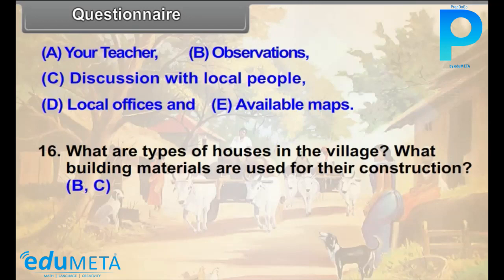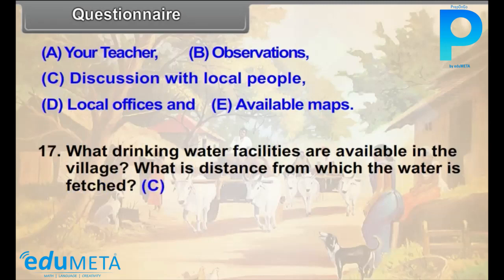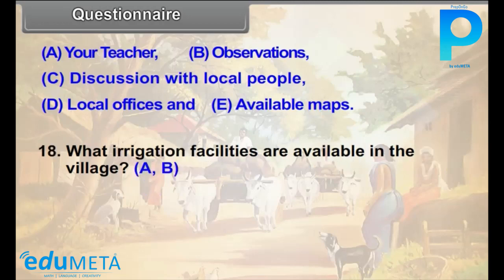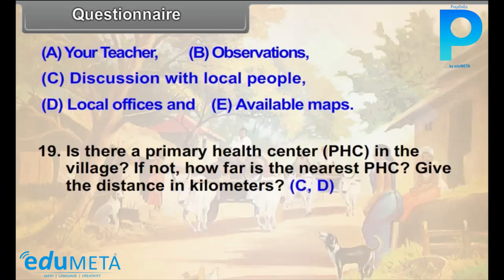Question 17: What drinking water facilities are available in the village? What is the distance from which the water is fetched? (C) Question 18: What irrigation facilities are available in the village? (A, B) Question 19: Is there a primary health center (PHC) in the village? If not, how far is the nearest PHC? Give the distance in kilometers. (C, D) Question 20: Is there a school in the village? If yes, up to which class? (B, C)